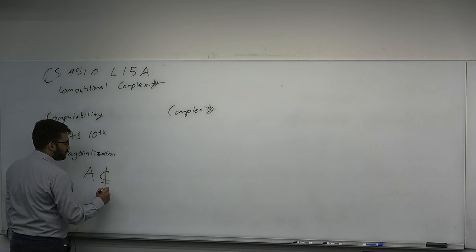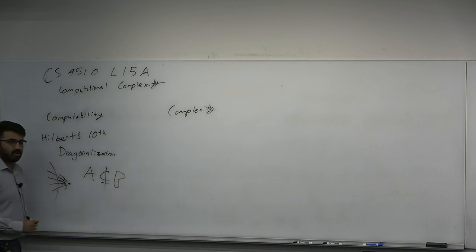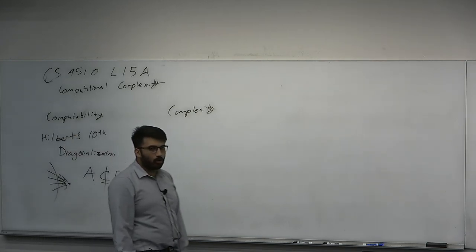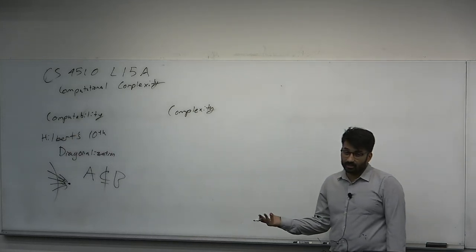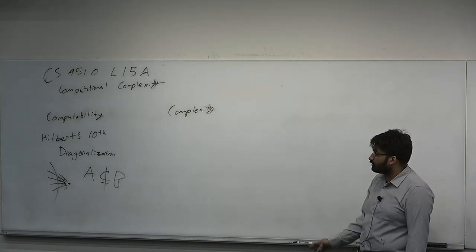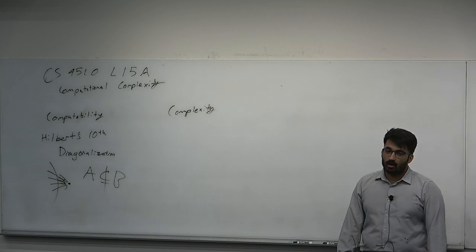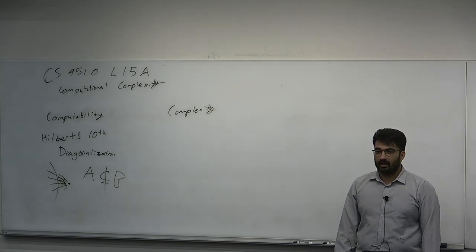Diagonalization is a separation tool. Given A is a subset of B, you can say it's a strict subset. Every theorem we proved in computability theory was diagonalization. Diagonalization also has an important role in complexity theory — many of the first theorems in complexity, including the first theorem in the field, are proven using diagonalization. But ironically, we know the limits of diagonalization.